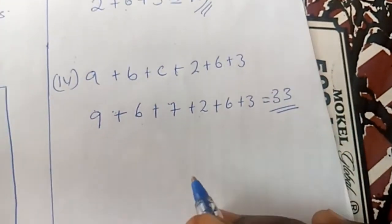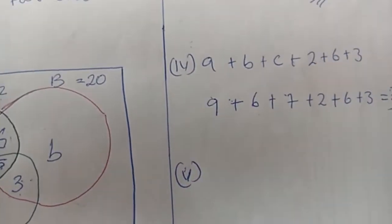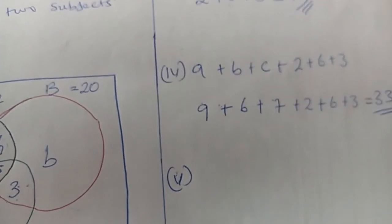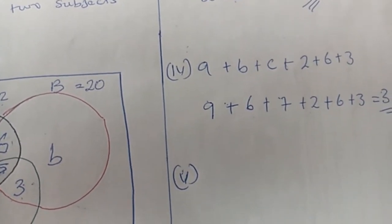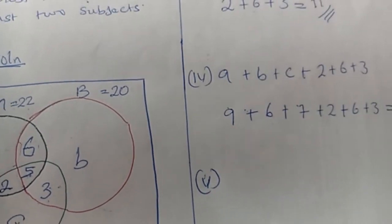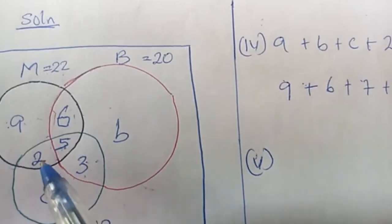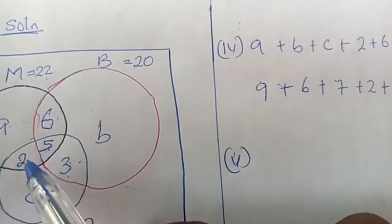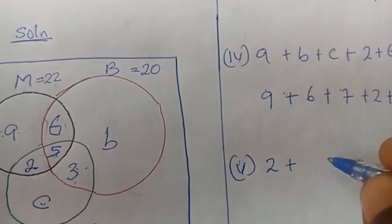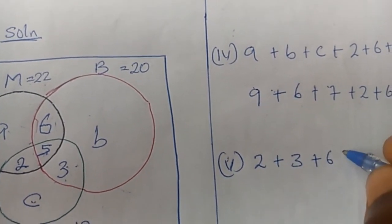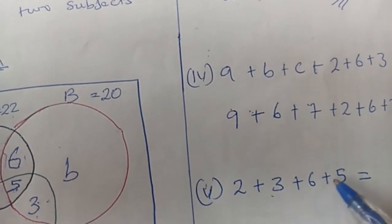At least two subjects means two and above — from two upward. If I say pay at least 1,000, the minimum is 1,000 and you can give more. So at least two includes the exactly-two regions and the three-way intersection. That is 2 plus 3 plus 6 plus 5, which equals 16.